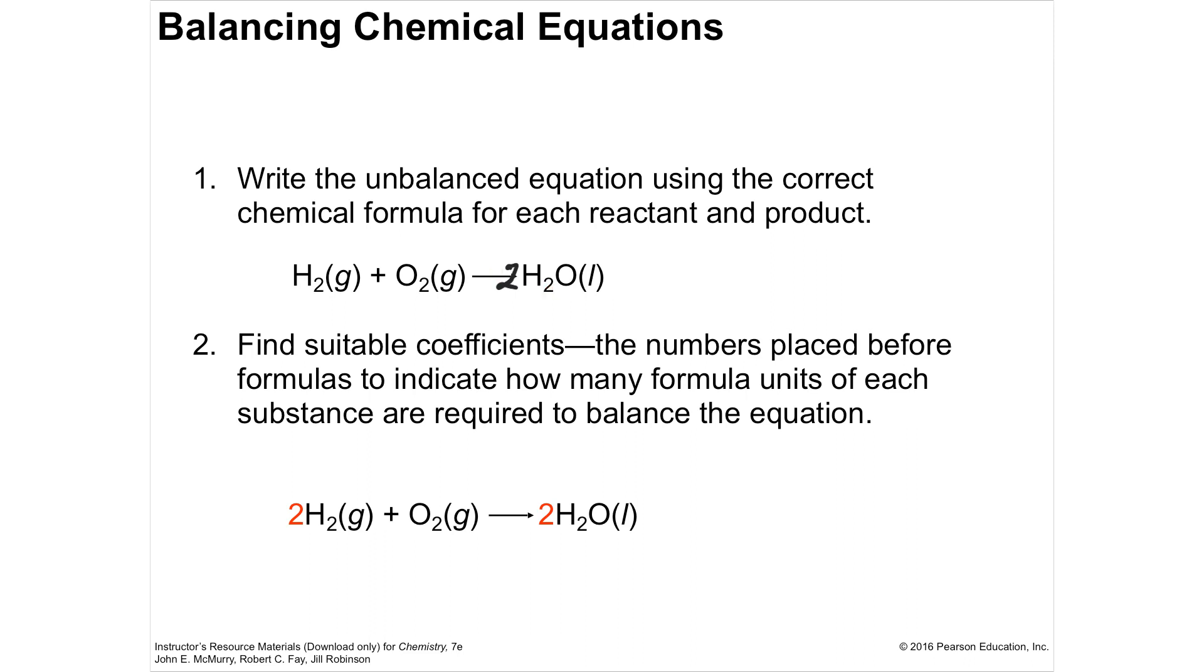I now have two times two, which is four, four hydrogens, but I only have two on the left, so I'm going to have to multiply the whole molecule by two in order to do that. So that's what they're saying. You're looking for suitable coefficients in order to make all the atoms be the same on both sides.